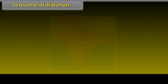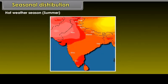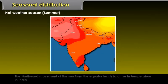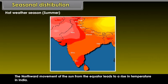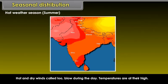During the hot weather season (summer), the northward movement of the sun from the equator leads to a rise in temperature in India. Hot and dry winds, called loo, blow during the day. Temperatures are at their highest.